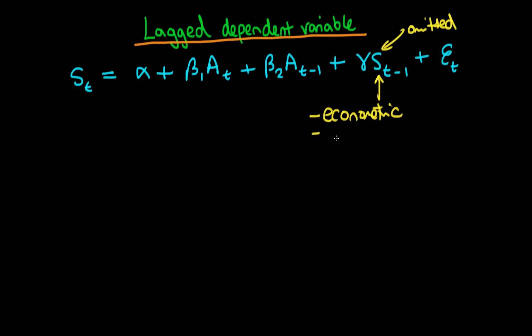Another reason is a more practical or logic-based one. If the product is addictive — let's say we're modeling cigarette sales — then the amount of cigarette sales next week depends on the amount smoked this past week because of this addictive factor. So that's another reason why you can think about including a lag dependent variable.